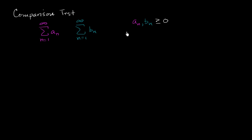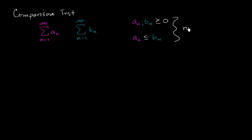We also know that each of the corresponding terms in the first series are less than or equal to the corresponding terms in the second series — so a sub n is less than or equal to b sub n — and this is true for all n's we care about: n equals one, two, three, and so on.